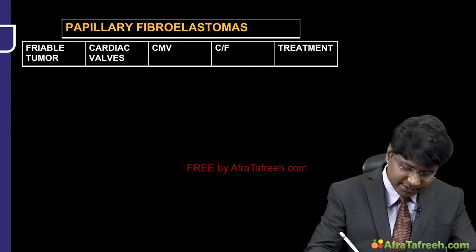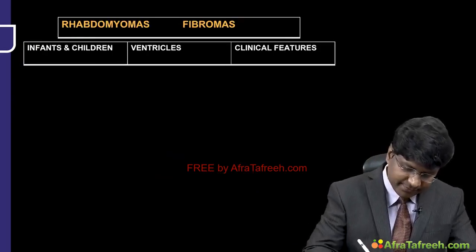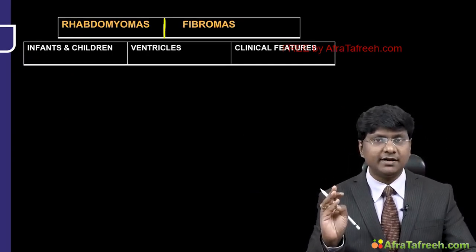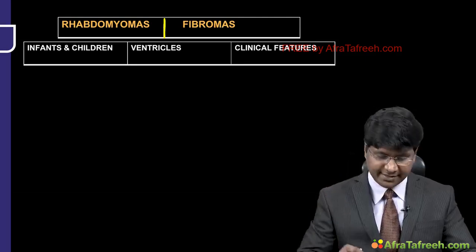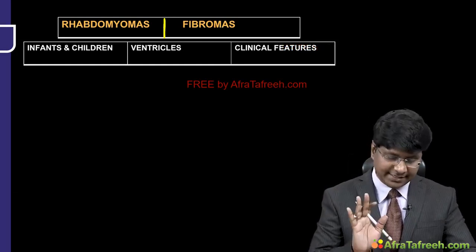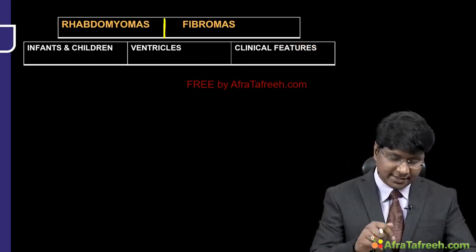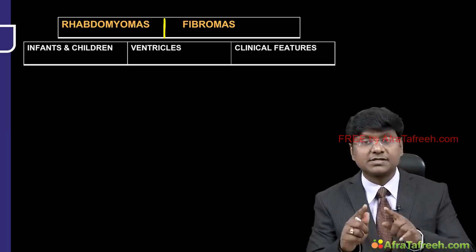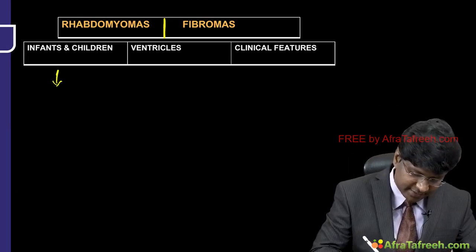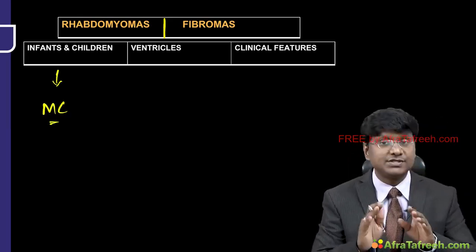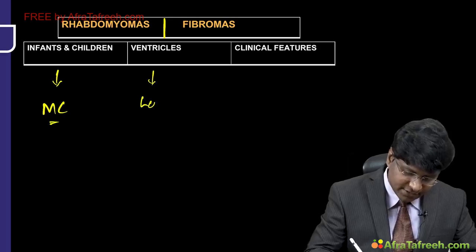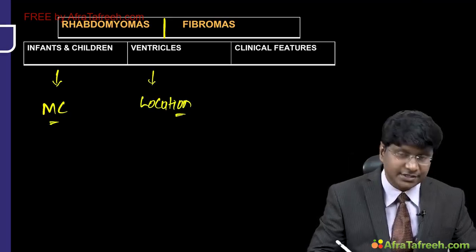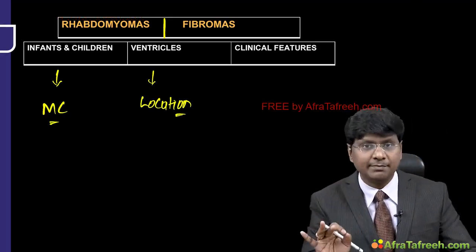Other benign tumors include rhabdomyomas and fibromas. Summary so far: atrial myxoma, cardiac lipomas, papillary fibroelastomas, and now rhabdomyomas and fibromas. Rhabdomyomas and fibromas are the most common cardiac tumors in infants and children. Their location is within the ventricles, where they cause mechanical obstruction to blood flow.